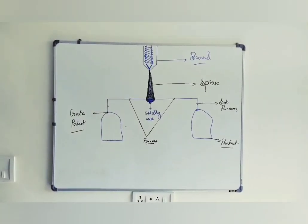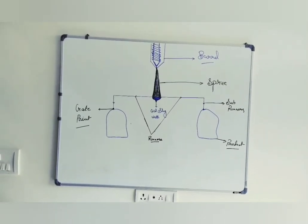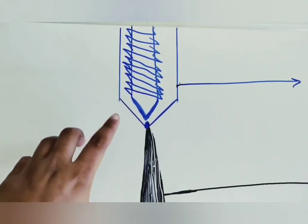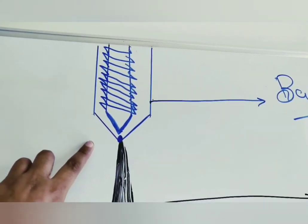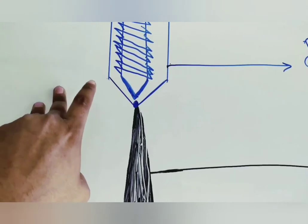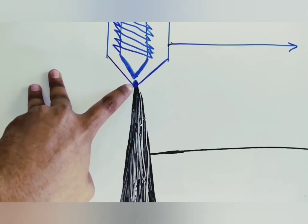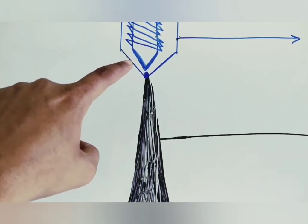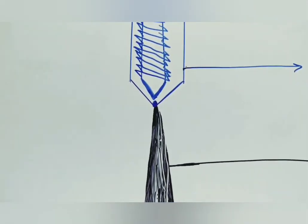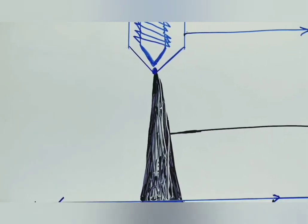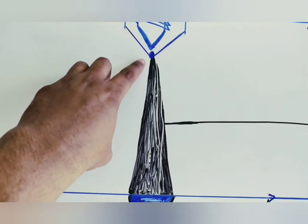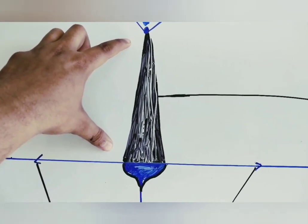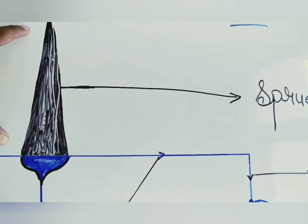I have shown everything here in a bigger diagram of how the feed system works. This is the barrel of the injection molding machine with a reciprocating screw. The material will be injected from this barrel into the mold. The section I have marked in black is called the sprue — S-P-R-U-E. The sprue is the first path where the material from the barrel is inserted into the mold.